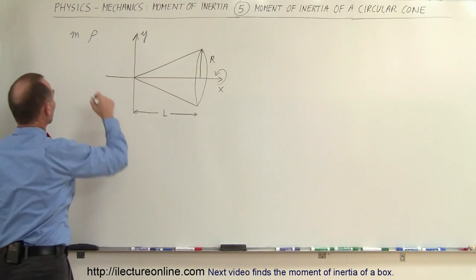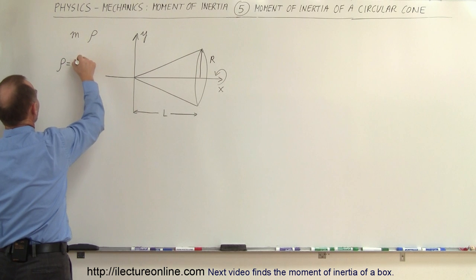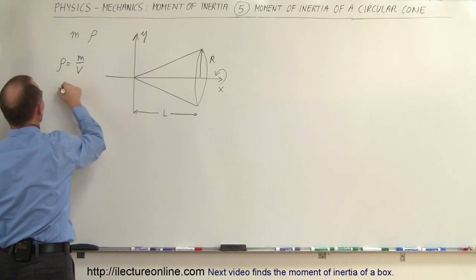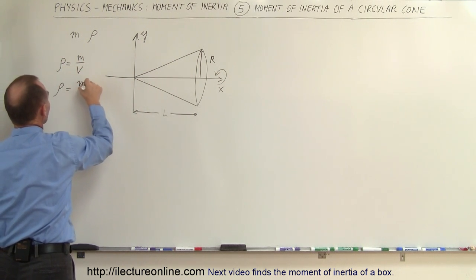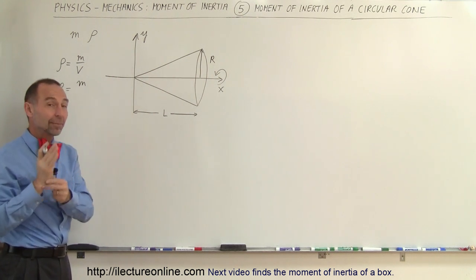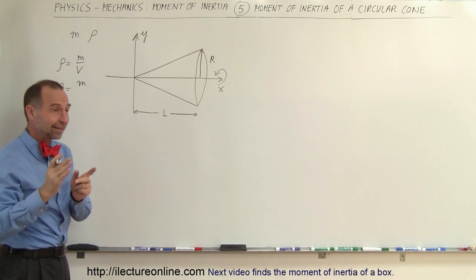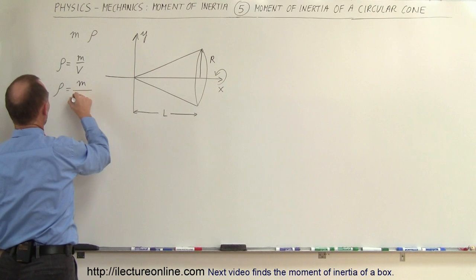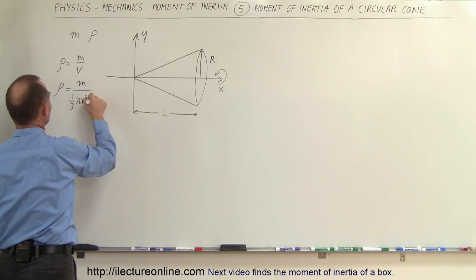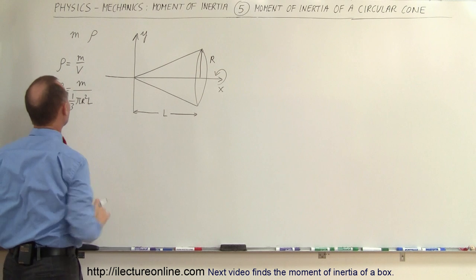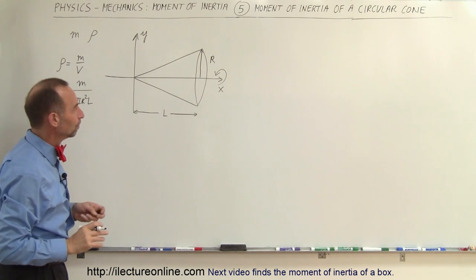The density can be found by taking the mass and dividing by the volume. The volume of a cone is the area of the base times the height times one-third, so it's divided by one-third pi R squared times L. That gives us the density of the cone.